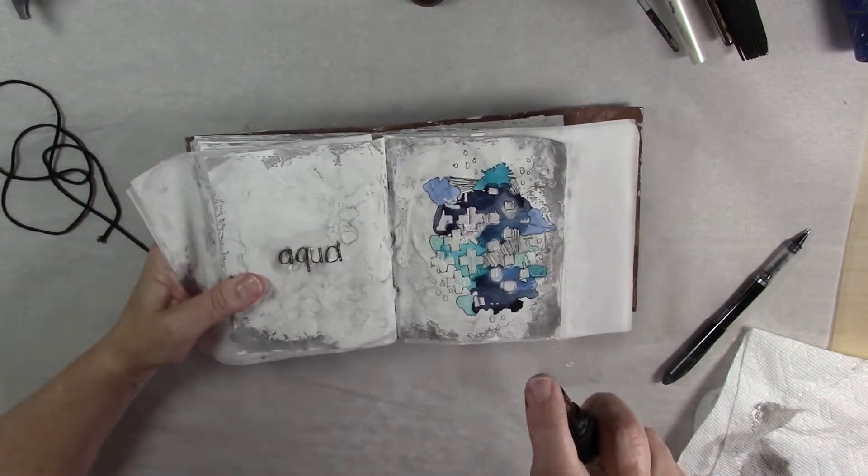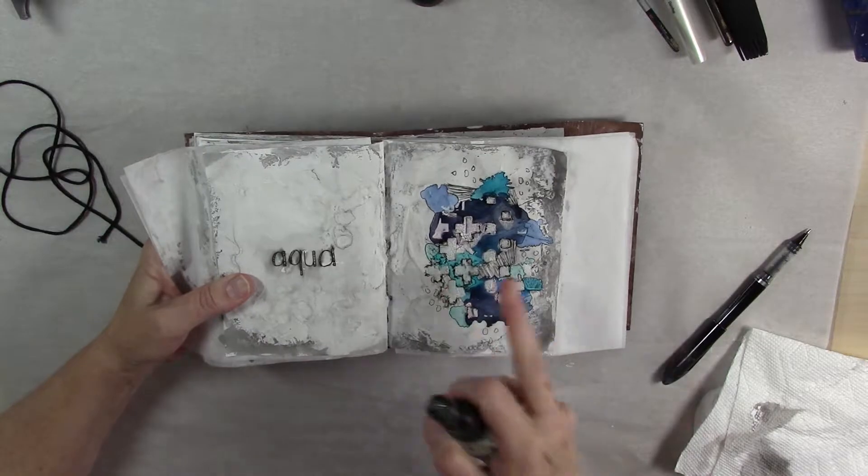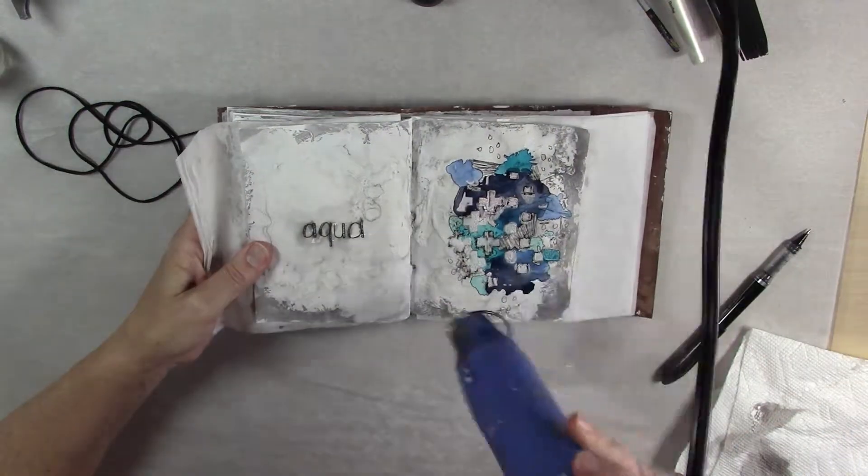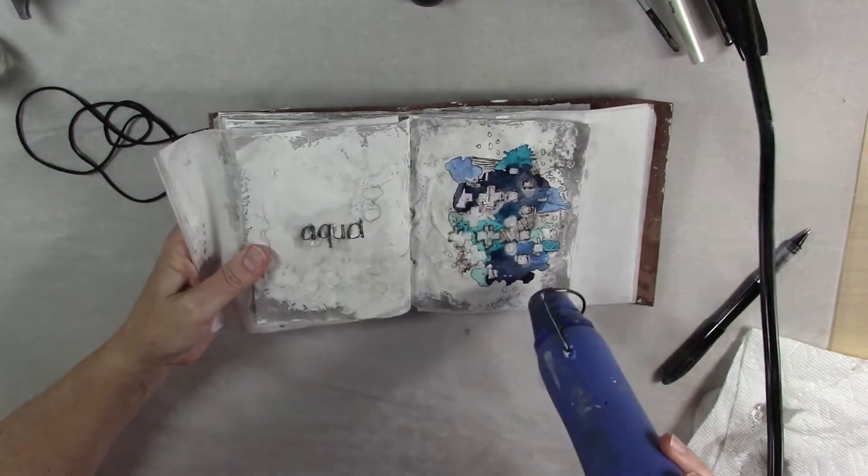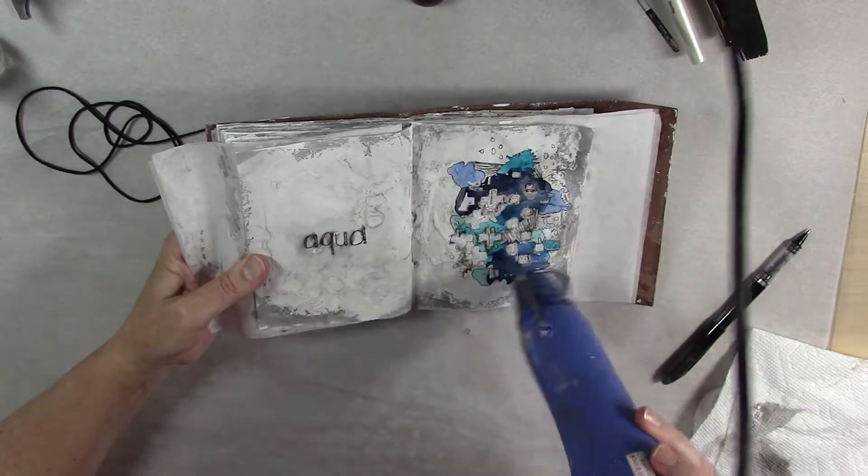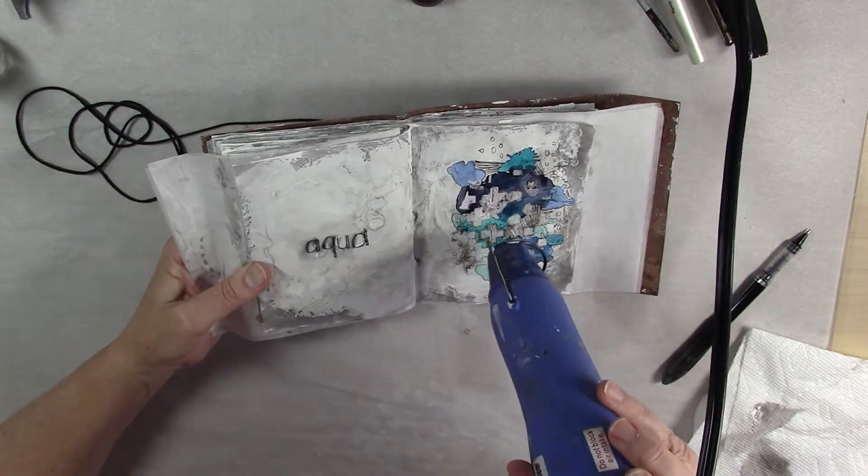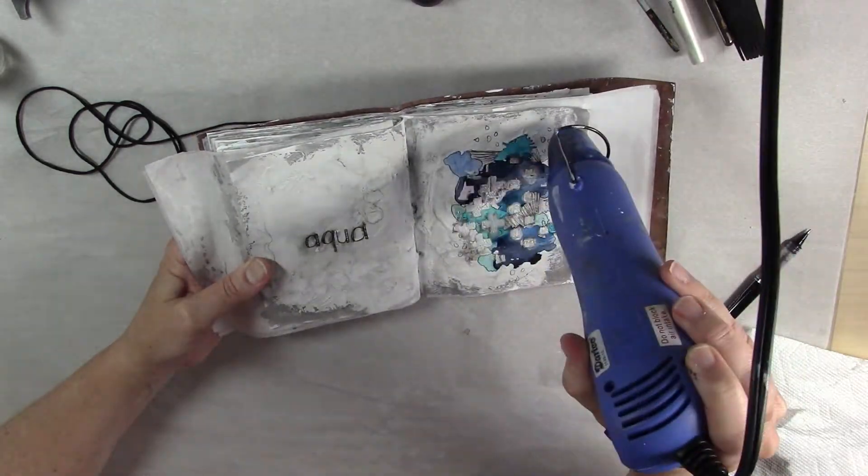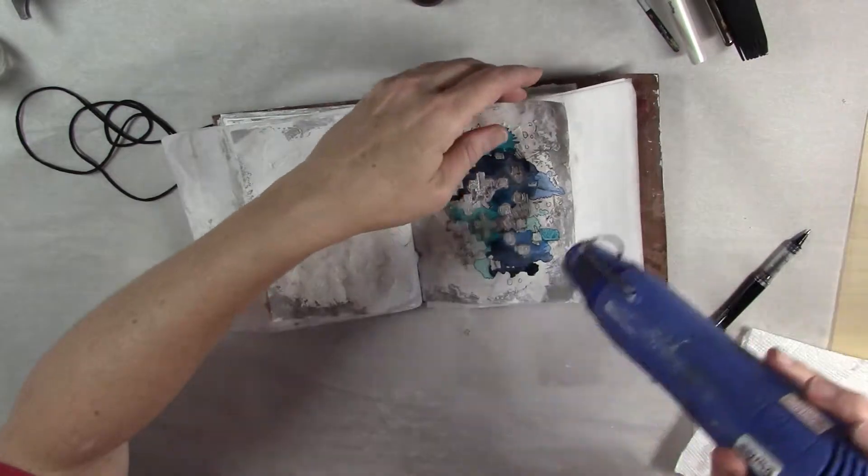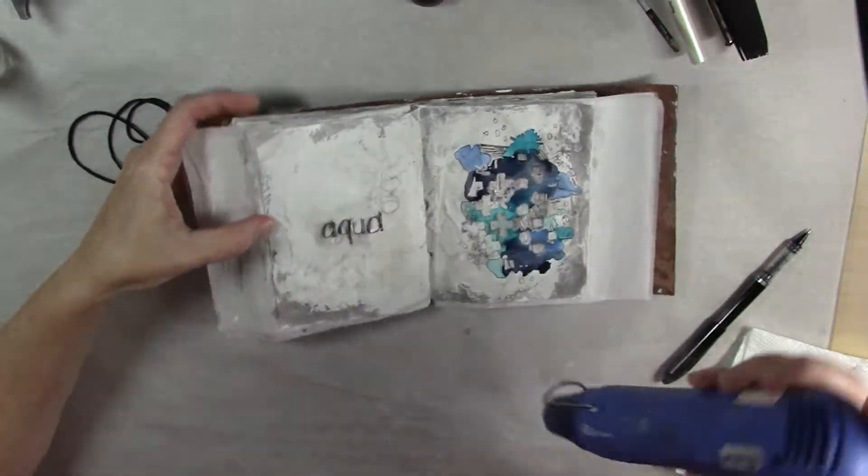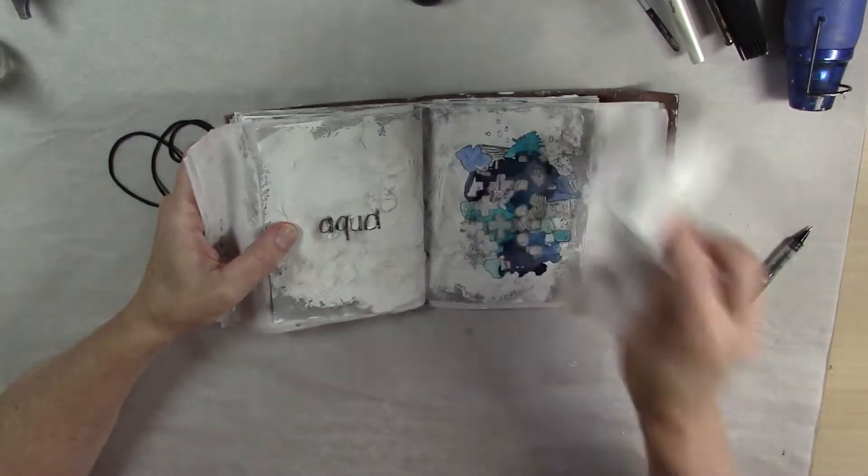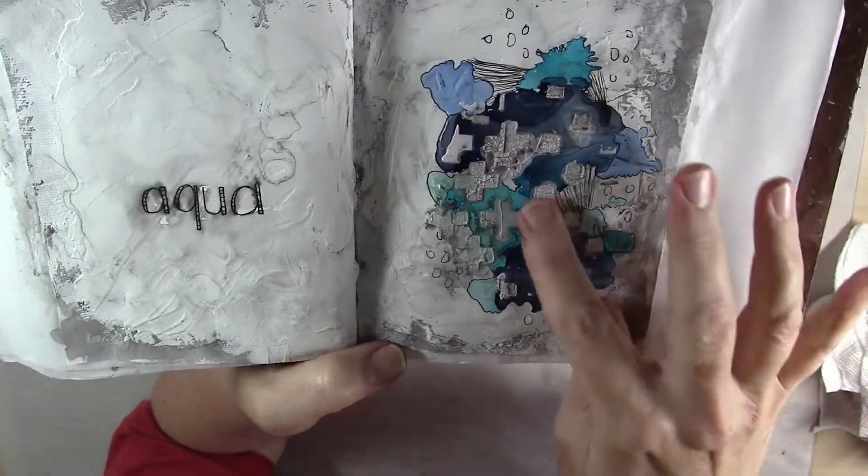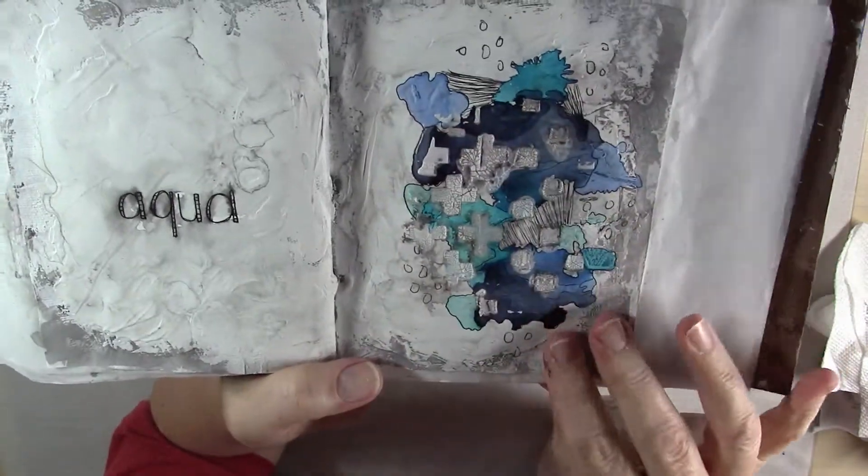So you can see I've just outlined most of the shapes on there. So now I'm just going to take some water and very lightly I'm going to mist it so you can see that it activated the pen. And then I'm just going to dry it very quickly. So you can see how that pen works. That pen mark went into the crackle paste and really accentuated it.